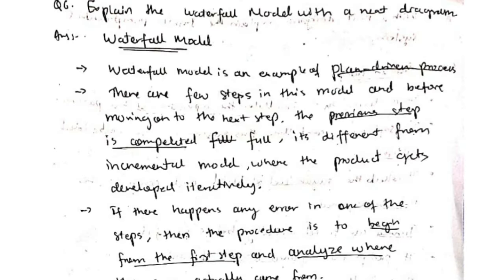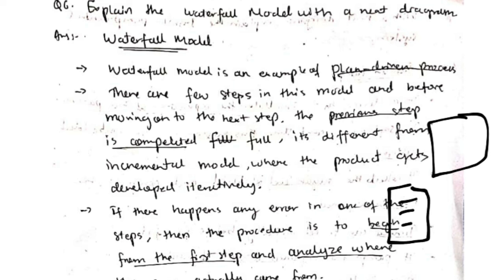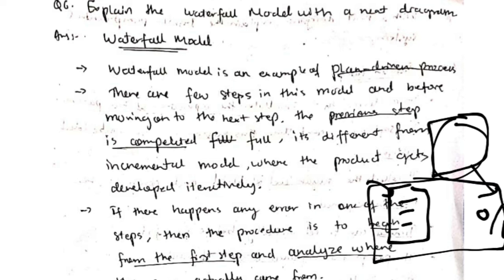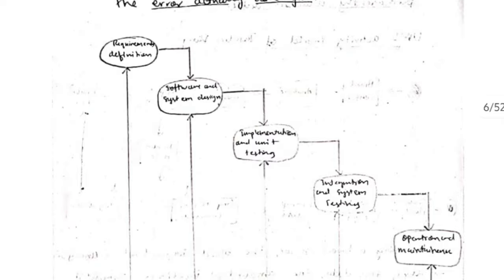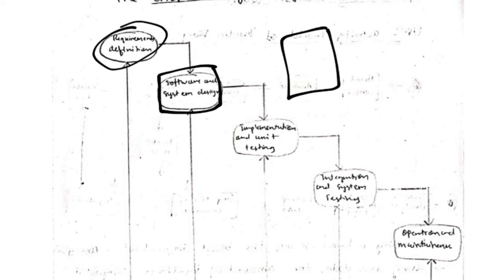The waterfall model: to develop any product, you first need a document mentioning all the requirements expected of the product and what the output should be. That is the first step — requirements definition. After that, you design the software and code whatever is required to build the product.